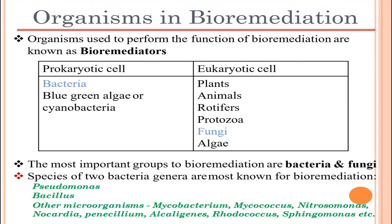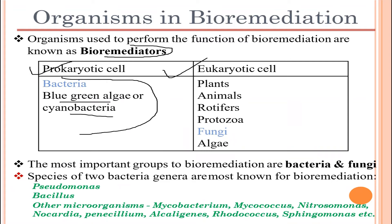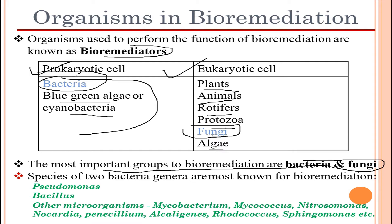Organisms in bioremediation are known as bioremediators. They include prokaryotic and eukaryotic cells. Prokaryotic cells involved are bacteria, blue-green algae, and cyanobacteria. Eukaryotic cells include plants, animals, rotifers, protozoa, fungi, and algae. The most important groups for bioremediation are bacteria and fungi, highlighted here, as they play the most significant role in the bioremediation process.